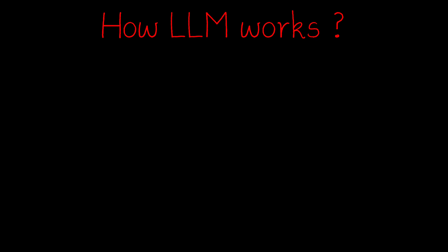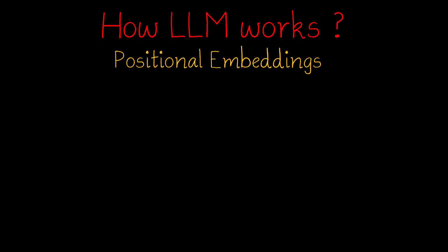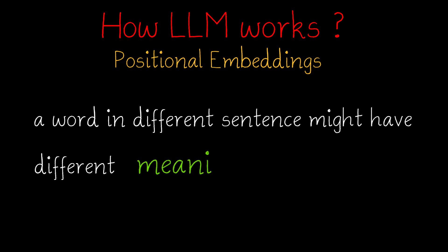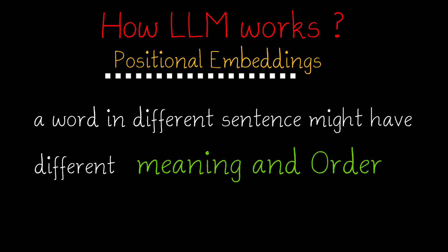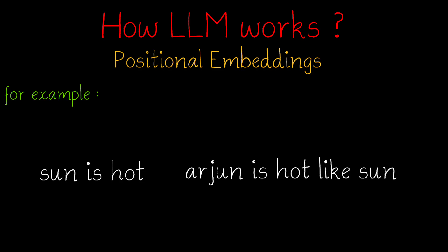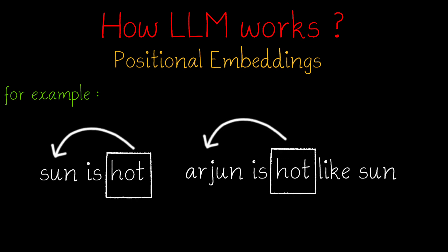Next, we have positional embeddings. A word in a different sentence might have a different meaning and order, so positional embeddings are required. For example, 'sun is hot' and 'Arjun is hot like sun' — here, 'hot' has a different meaning in both sentences.